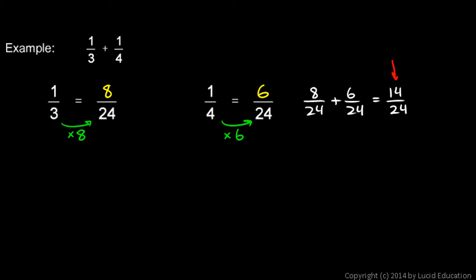This fraction, though, is not in lowest terms. 14 and 24 are both divisible by 2, so this can be simplified one step further. 14 divided by 2 is 7, and 24 divided by 2 is 12. So that's how I should write my answer. 7 over 12, or 7 12ths.